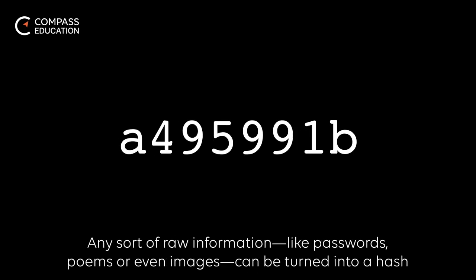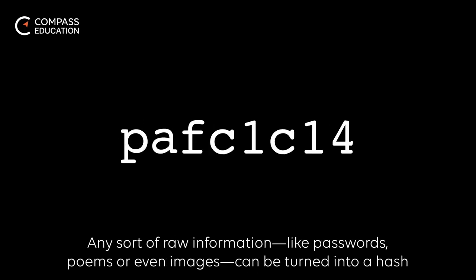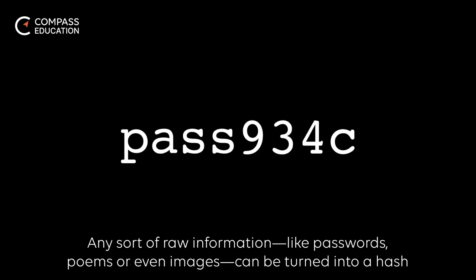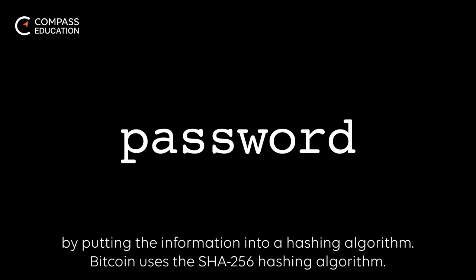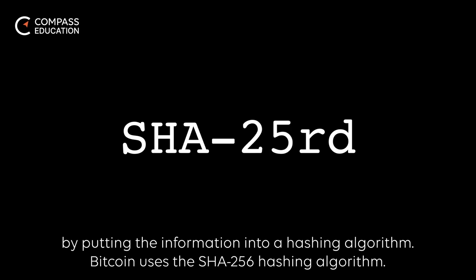Any sort of raw information, like passwords, poems, or even images, can be turned into a hash by putting the information into a hashing algorithm. Bitcoin uses the SHA-256 hashing algorithm.